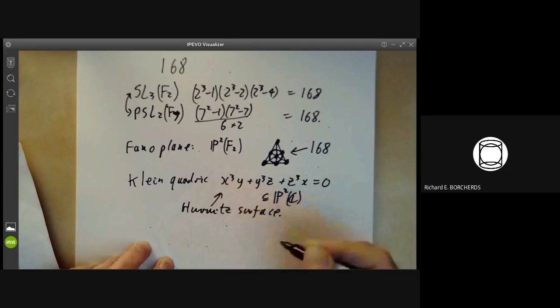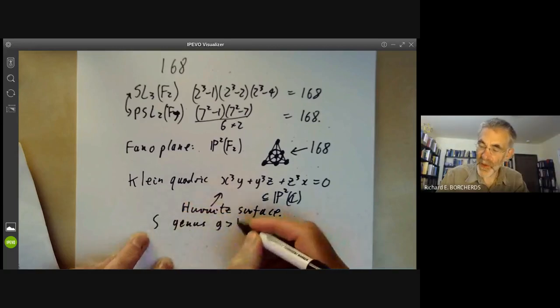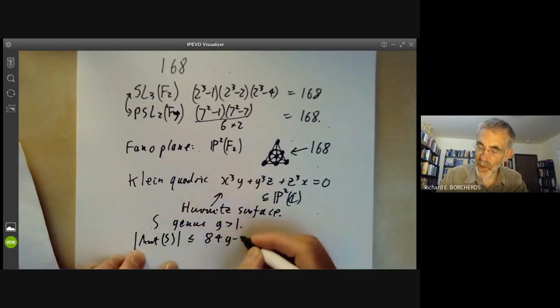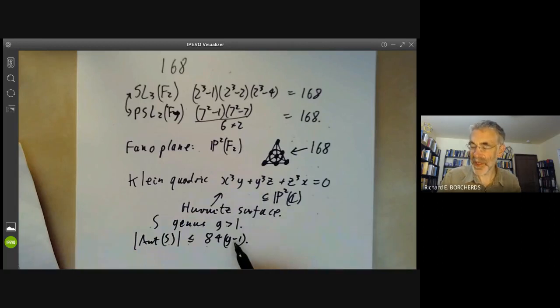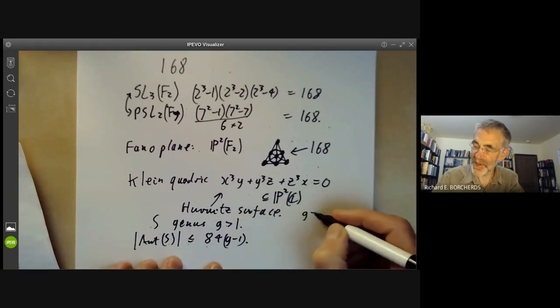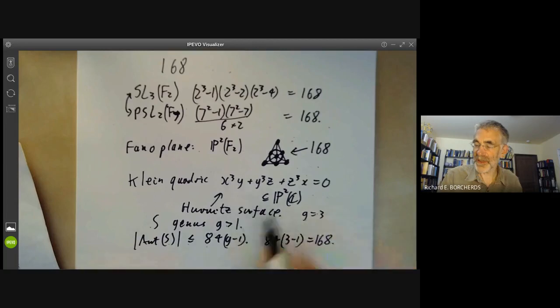And this is an example of a Hurwitz surface. So if you've got a compact Riemann surface S of genus G greater than one, then Hurwitz showed that the automorphism group of S has order at most 84 times G minus one. And there are no examples for G equals two. And for G equals three, there is this example here. So for this surface, genus G equals three and its automorphism group is exactly equal to 84 times three minus one, which is 168. And it's the unique Riemann surface of genus three with an automorphism group this large.